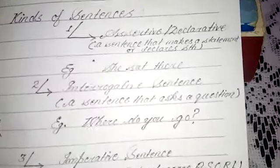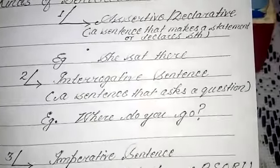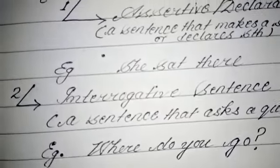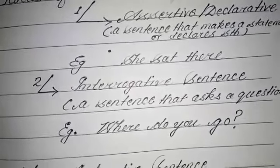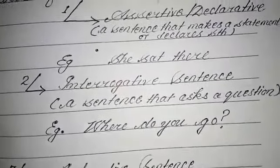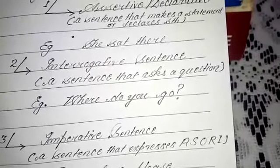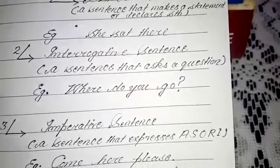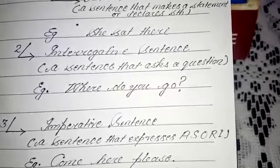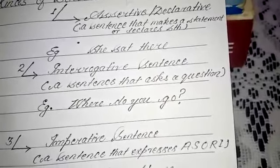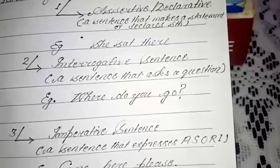The second kind of sentence is the interrogative sentence. Many students mispronounce it — it is not 'interrogative' but 'interrogative.' An interrogative sentence is one that asks a question, and in almost every interrogative sentence we see a question mark at the end. Examples include: 'Where do you go?', 'How are you?', 'Do you eat food?'